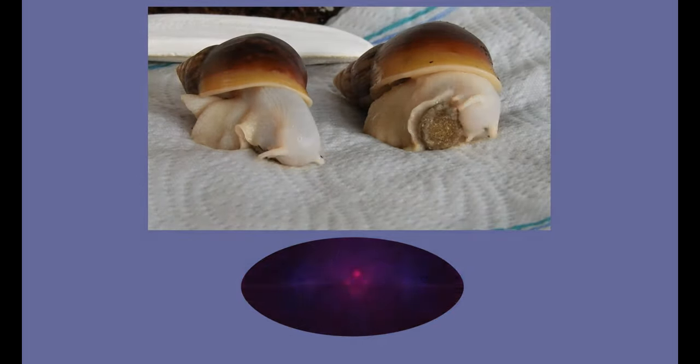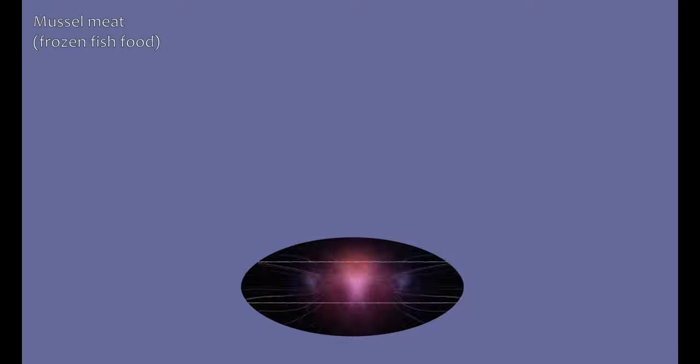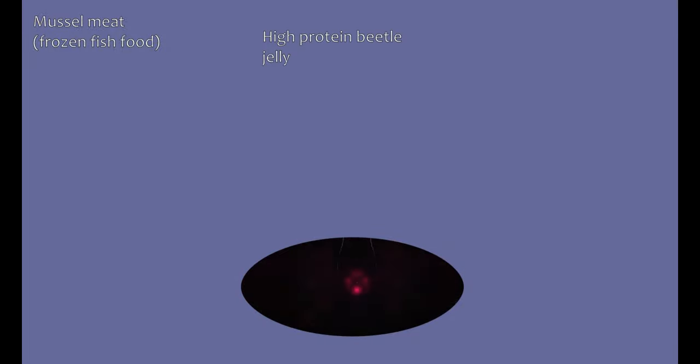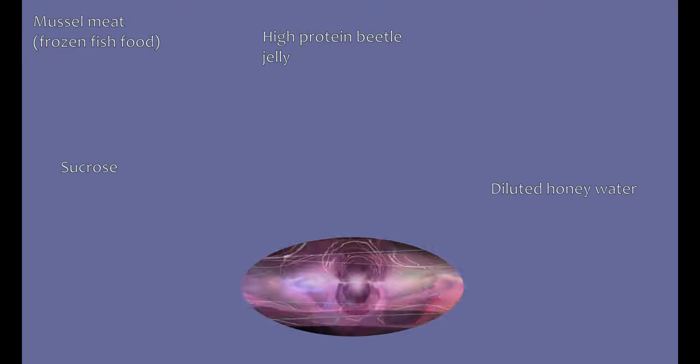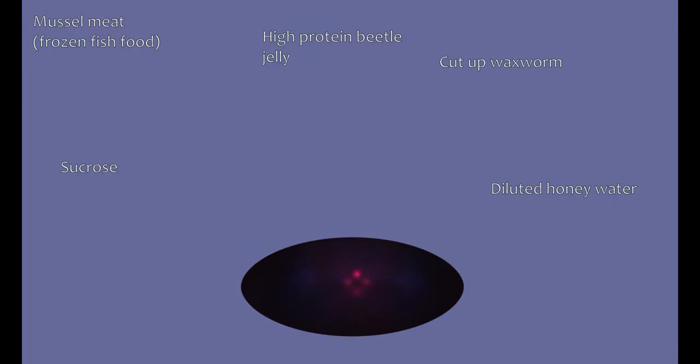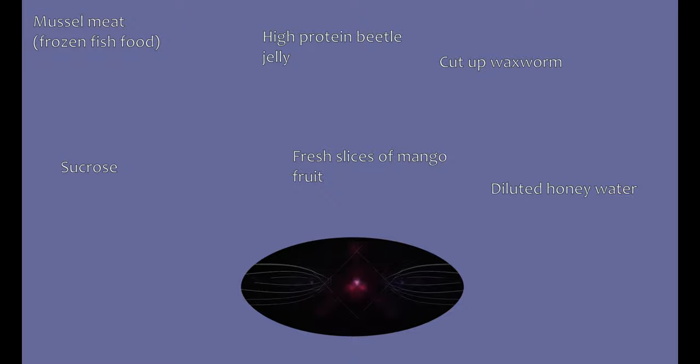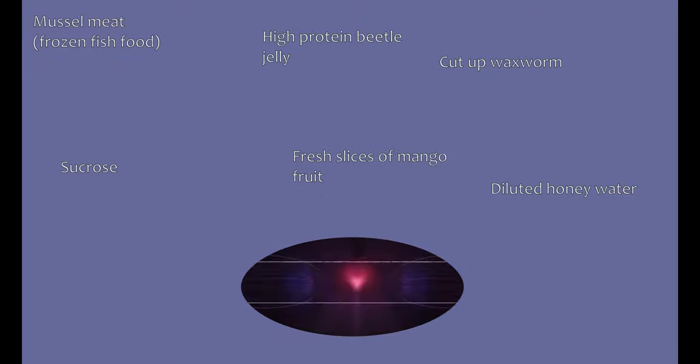I will now list some of the weirder food options that I found out after recording my video back then. Well they also feed on muscle meat, not with a C but as in Mytilus edulis that is sold as fish food in frozen form, high protein beetle jelly, sugar as in sucrose, diluted honey water, cut up wax worms, fresh slices of mango fruit, and I guess many many things more that I haven't tried out yet. But I'm not too sure if all those options would be a sufficient food supply, probably not in most cases. But even in winter I find slugs outside. As long as it's slightly above 5 degrees Celsius, then I can usually find still some slugs and even some earthworms, which are also a quite complete food supply.